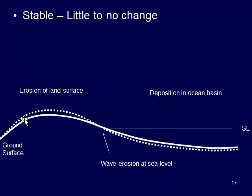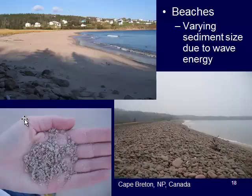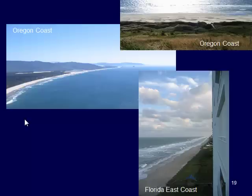In stable areas with very little to no change, we have gradation happening — the land surface slowly eroding and depositing material into the oceans, with wave action transporting sediments along the coastline. In these stable areas, we end up with more beach environments. Depending on the wave energy, we might have smaller particles like sand, or if the waves are really big with lots of energy, we can transport larger particles and get cobble beaches. Some parts of the Oregon coast are fairly stable, not really rising or sinking, and the Florida east coast is a good example of these stable environments.